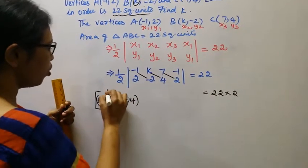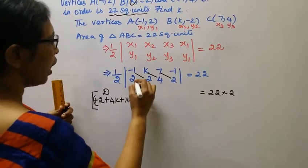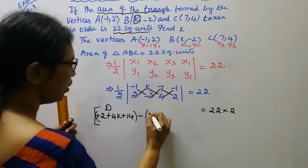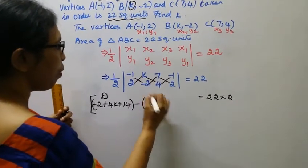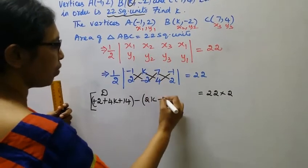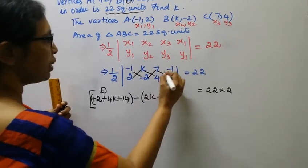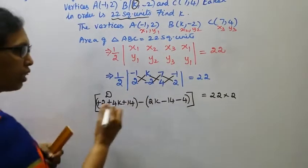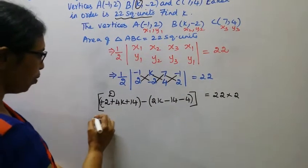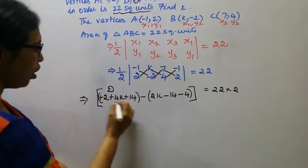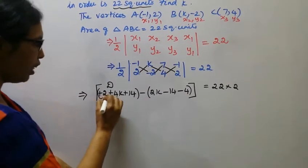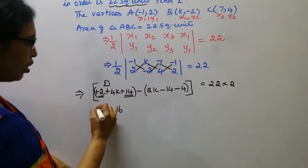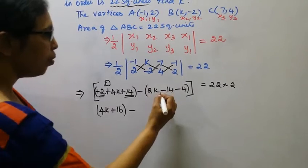Upward: 2 into k is 2k, minus 2 into 7 is minus 14, minus 4 into -1 is plus 4. So we have 4k plus 14 plus 16 minus 2k minus 14 minus 4, which is minus 18, equal to 22 into 2 is 44.